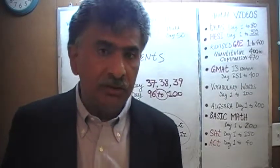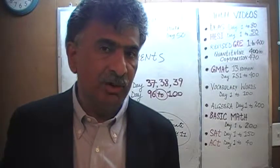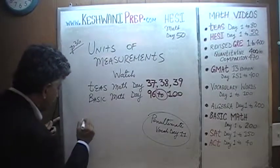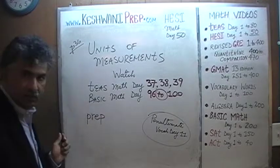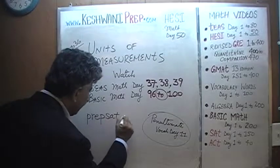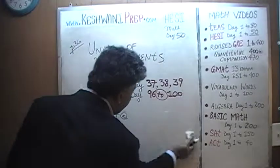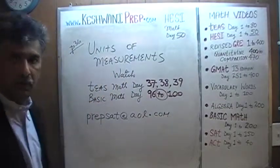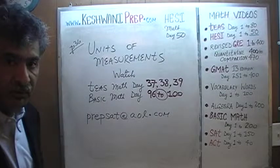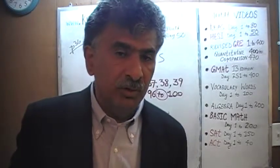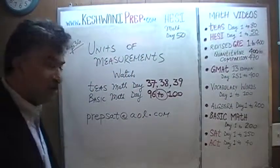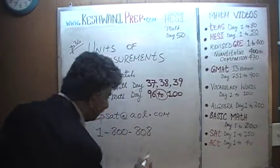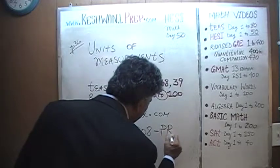If you need more help — one-to-one, personalized, individualized help — I'm always here. You can reach me at prepsat@aol.com. Please write me an email if you wish to work with me. I'm a private tutor and I provide one-to-one tutoring over the internet on Skype. You can also reach me at my office: the telephone number is 1-800-808-PREP.